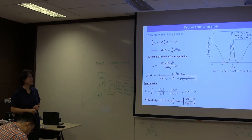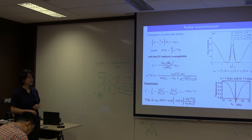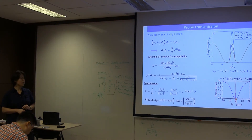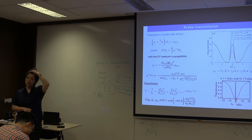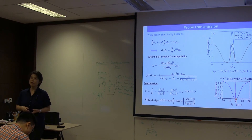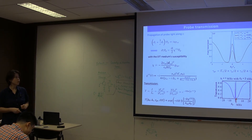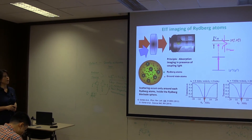Here is a simulation of the EIT spectrum showing different values of gamma_gr — different dephasing terms — and how the spectrum changes. If the detuning of the coupling light is shifted, the EIT spectrum is also shifted accordingly. In the real experiment this shift comes from Rydberg-Rydberg interactions. The probe transmission gives us information about interactions, dephasing, and all that, which motivates using this technique to work towards EIT imaging of Rydberg atoms.